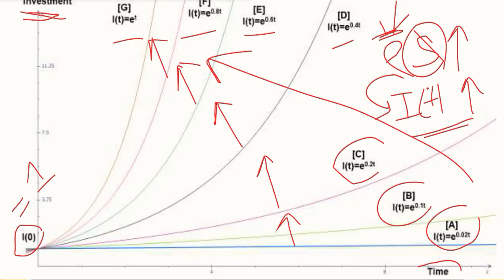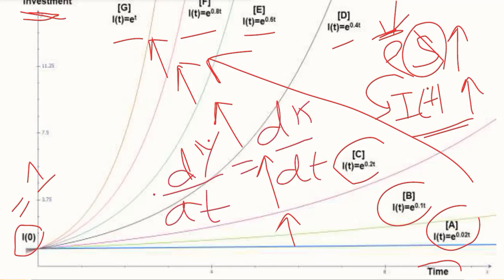This is how we can understand the Domar's growth model in a graphical way, where we have developed a time path on which the equilibrium between the demand side and the supply side is retained over time. It is a dynamic equilibrium.